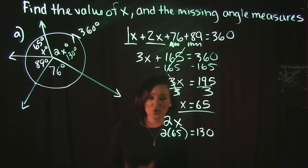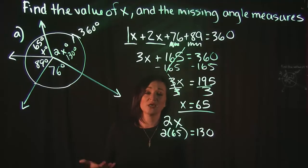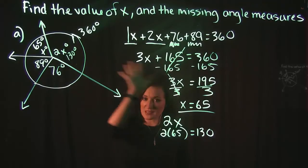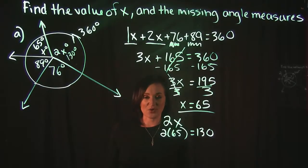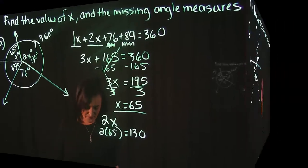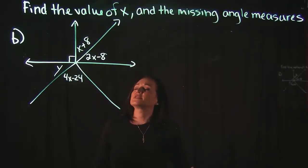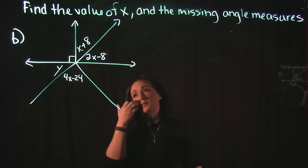So all we used here was the fact that a circle equals 360 degrees. We took all the angles in that circle, added them together, and set it equal to 360. Let's take a look at our next problem. All right. So taking a look at example B, our next example here.